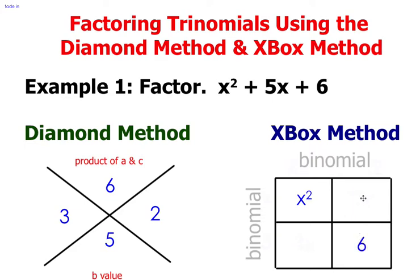And then in the lower left and the upper right you're going to write the two factors. Factor 1 is 3x and factor 2 is 2x.